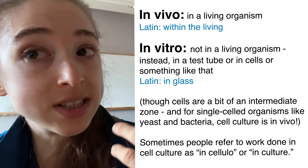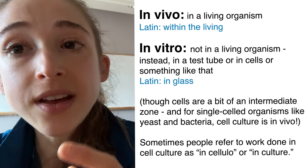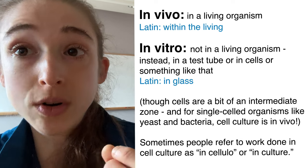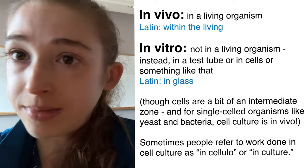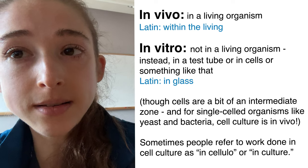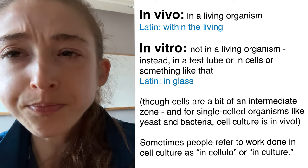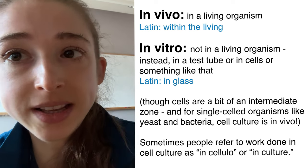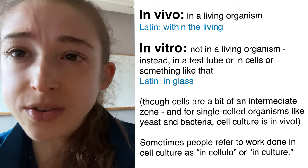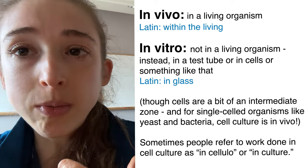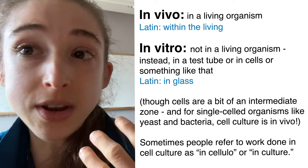We have in vivo, which comes from Latin for 'within the living,' and then in vitro, which comes from Latin for 'within glass' — like test tubes. You might be doing this in an Eppendorf tube, in dishes, and things like this. So there are all sorts of different in vitro settings, but it's characterized by some sort of artificial setting that you can manipulate.